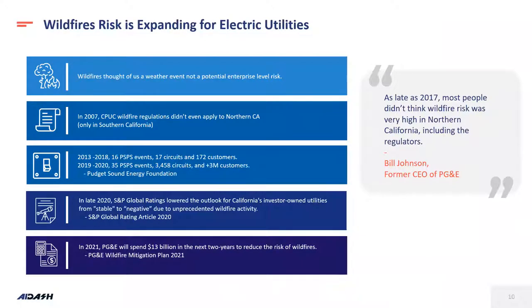To highlight that, Bill Johnson, former CEO of PG&E, was quoted saying that in late 2017, a lot of people didn't really view this as a risk in Northern California. History shows the trajectory is increasing though — no one really looked at it as enterprise-level risk. In 2007 there weren't many regulations, and PSPs were sparse until 2018. You can see the risk escalating in the financial realm too — S&P Global downgraded many investor-owned utilities in California due to unprecedented wildfire risk and historic droughts. By 2021 and 2022, PG&E planned to spend about $13 billion according to their wildfire risk mitigation plan.